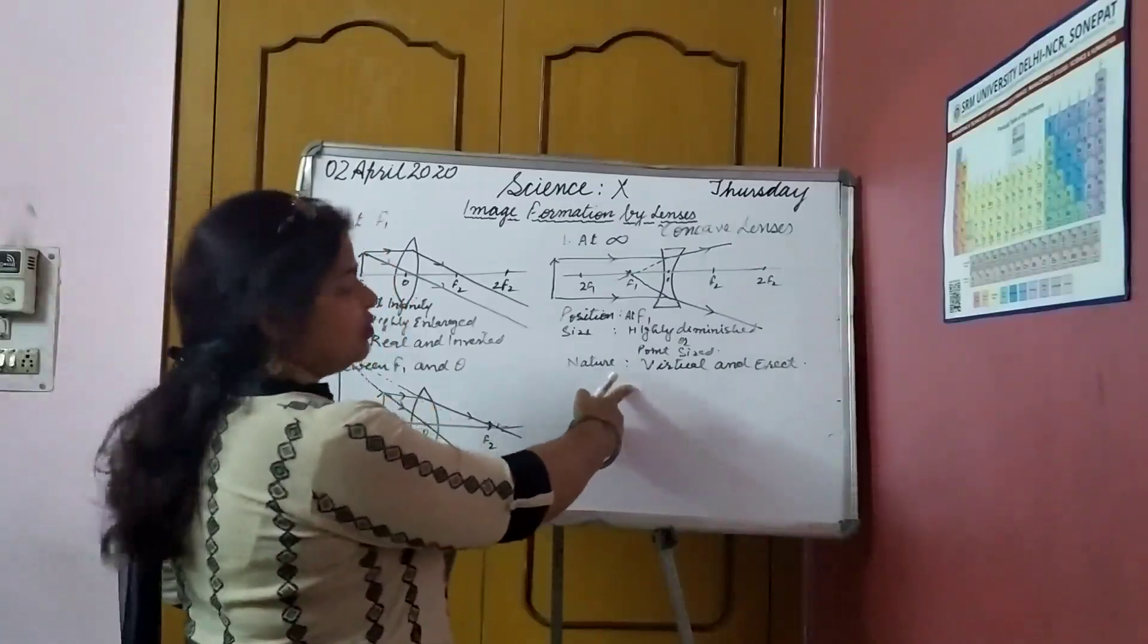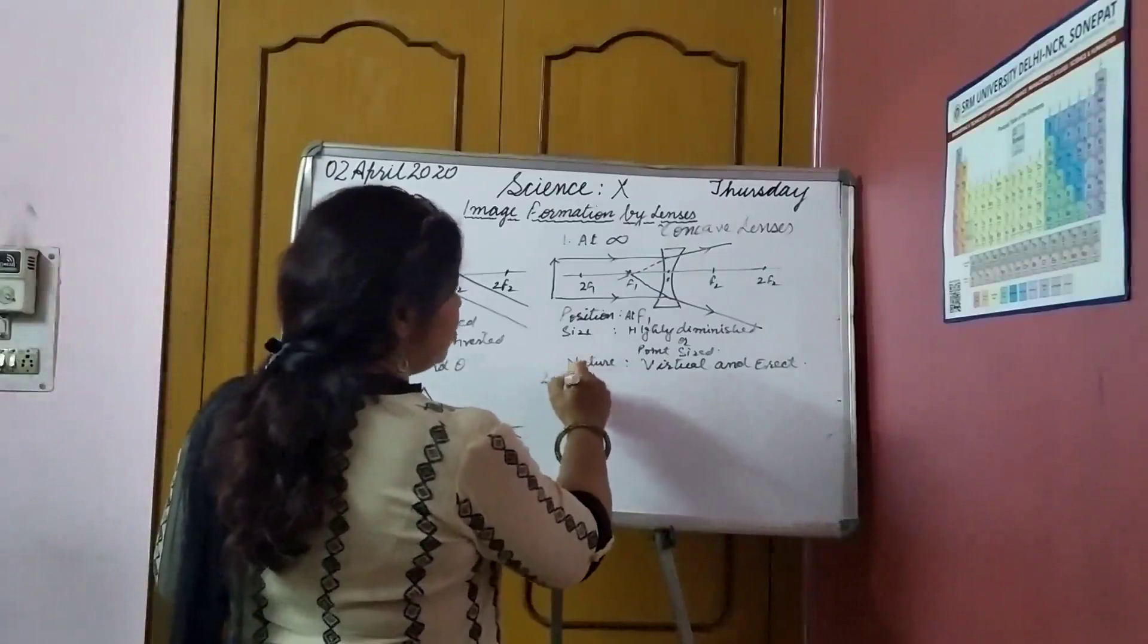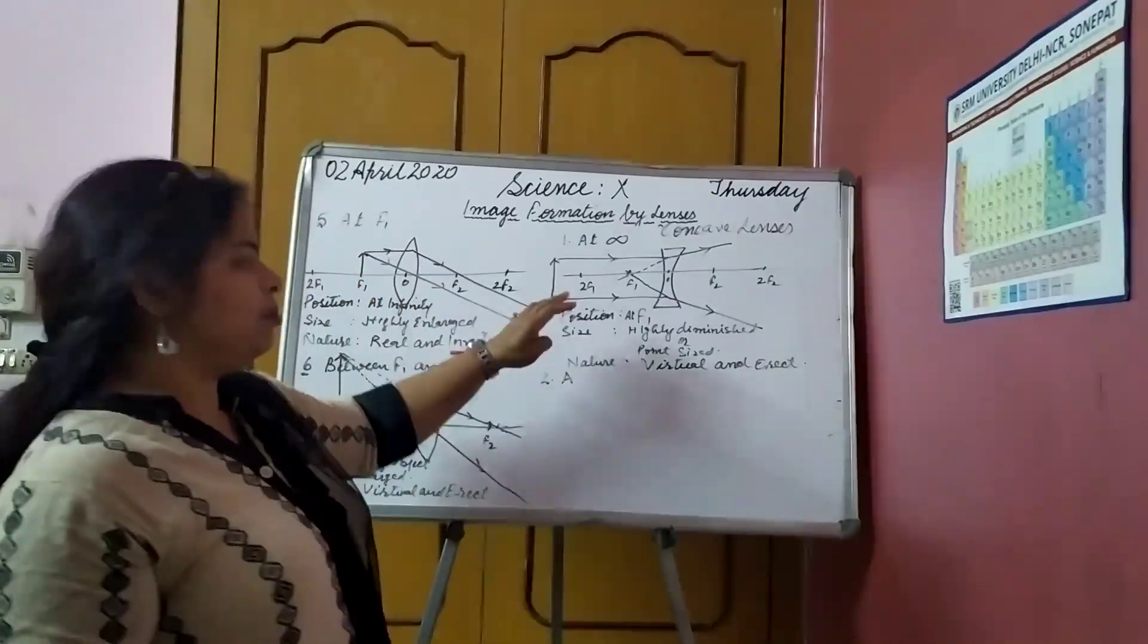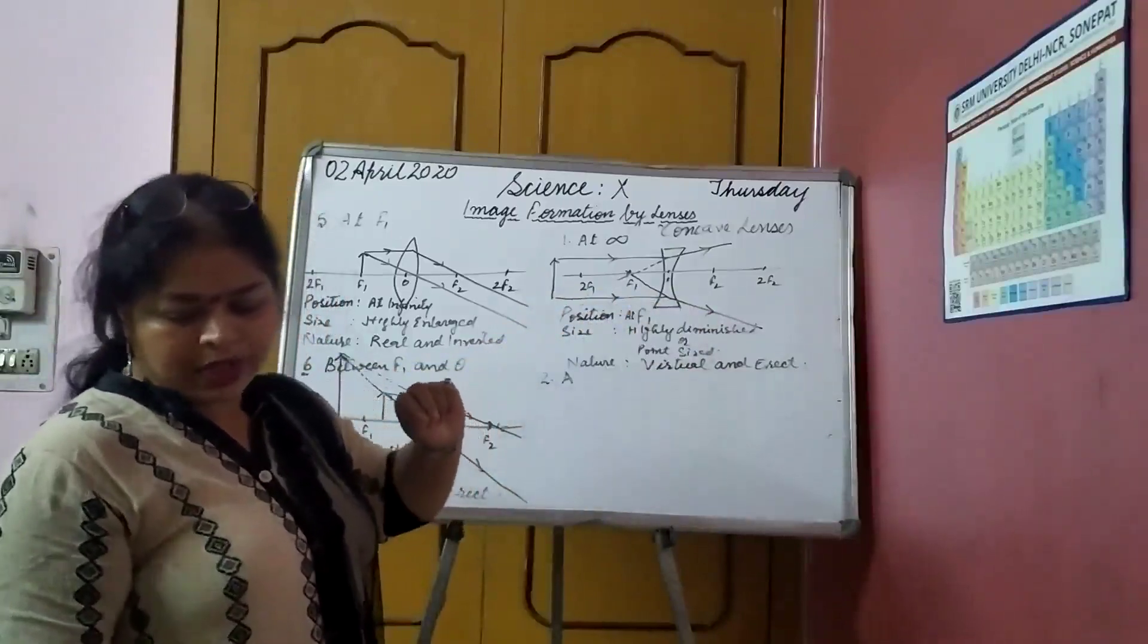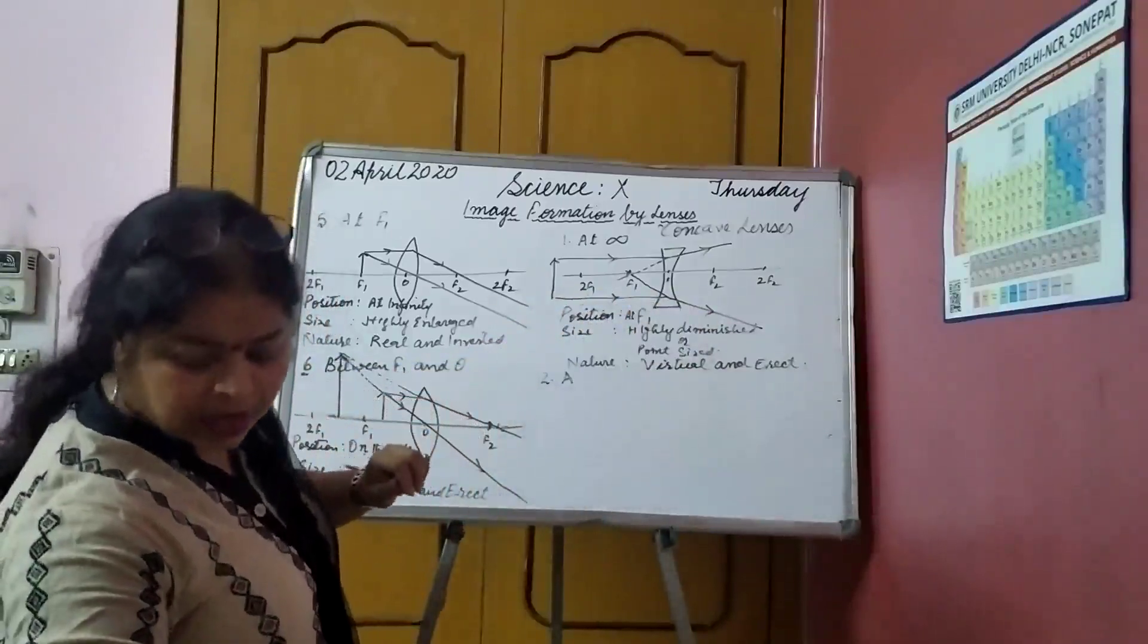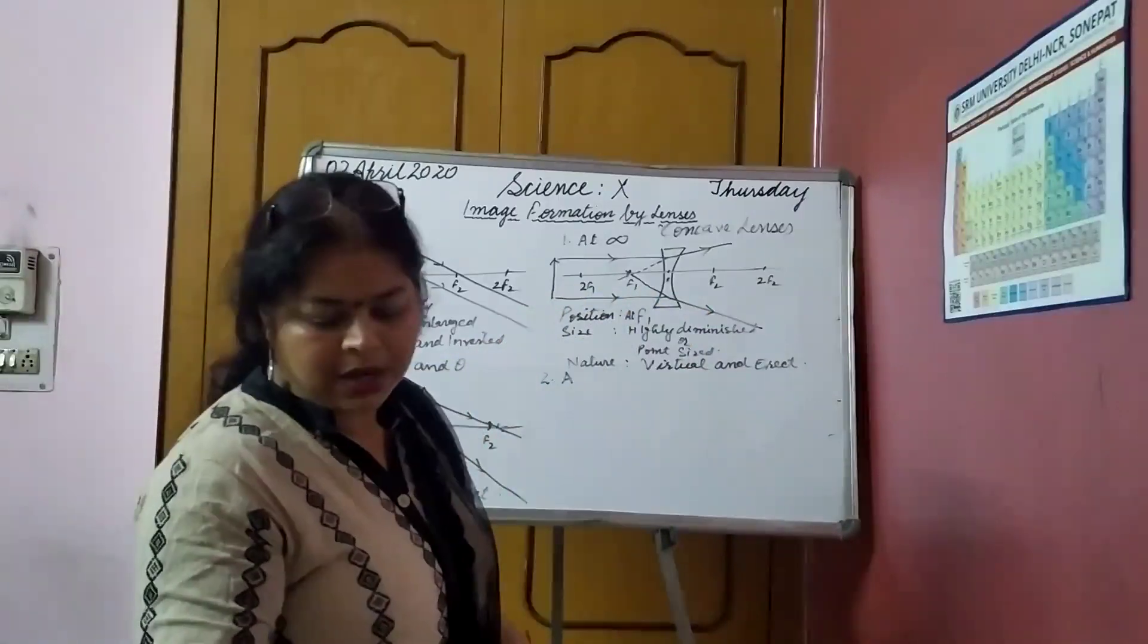So, this is the first case of concave lens. Then, second case, when the object is kept anywhere between infinity and optical center. Okay. So, when the object is kept where? Between infinity and the optical center.